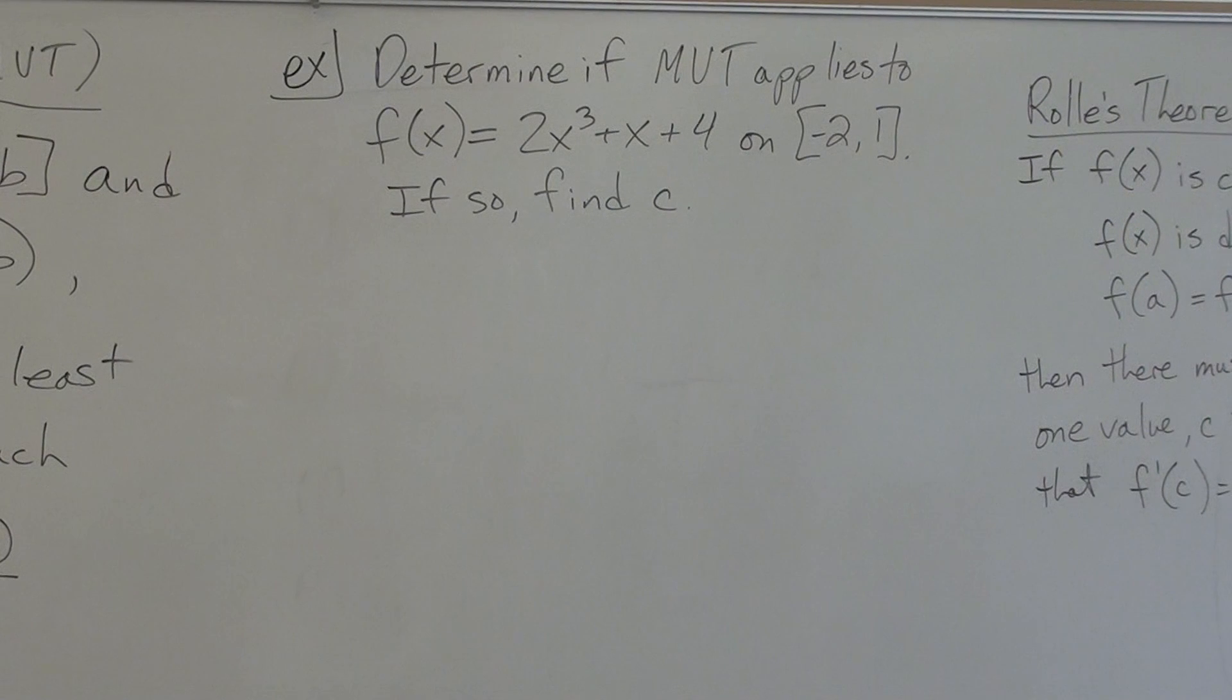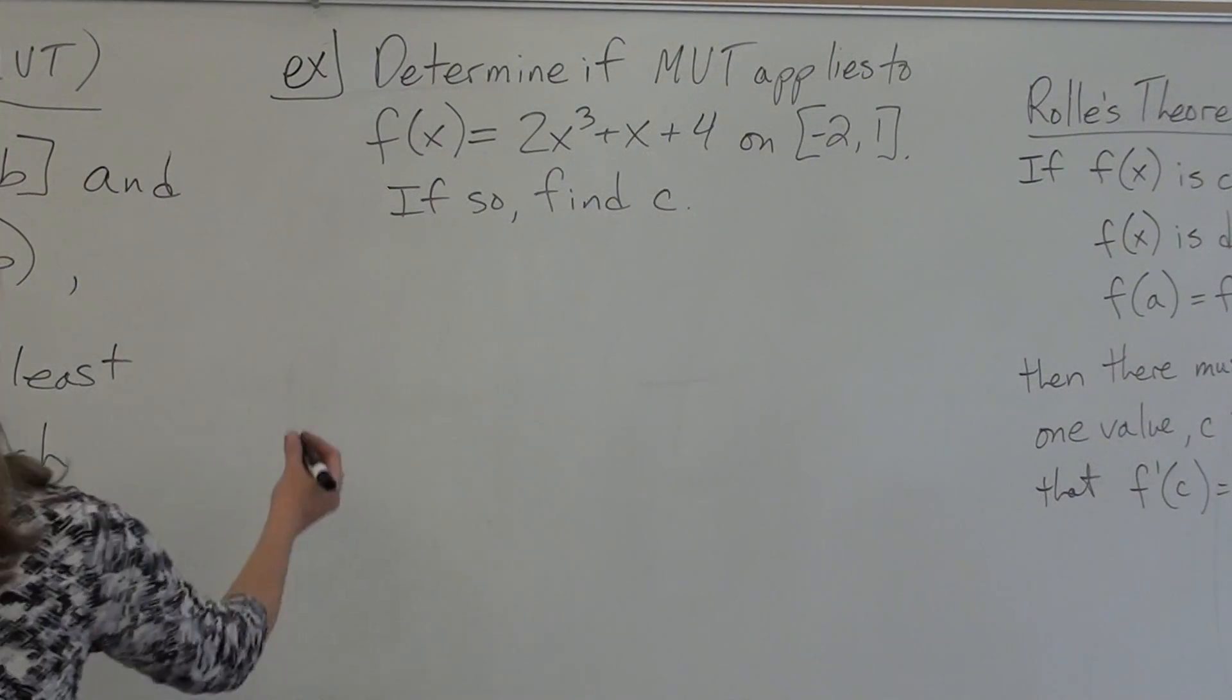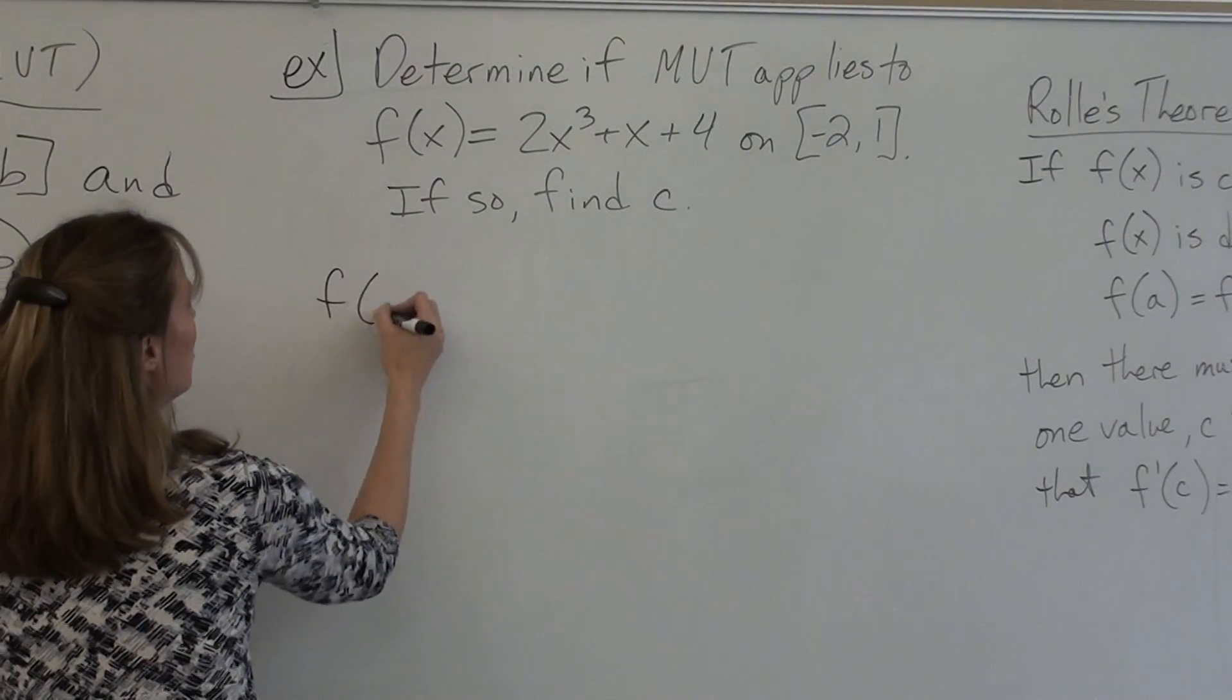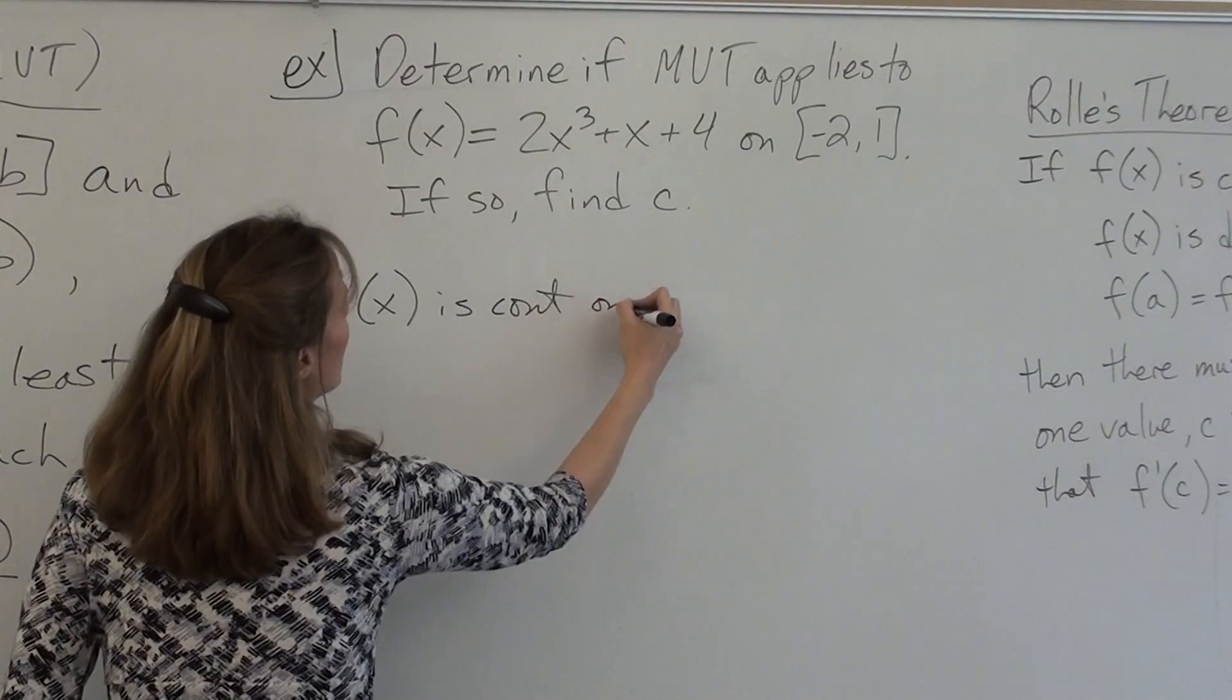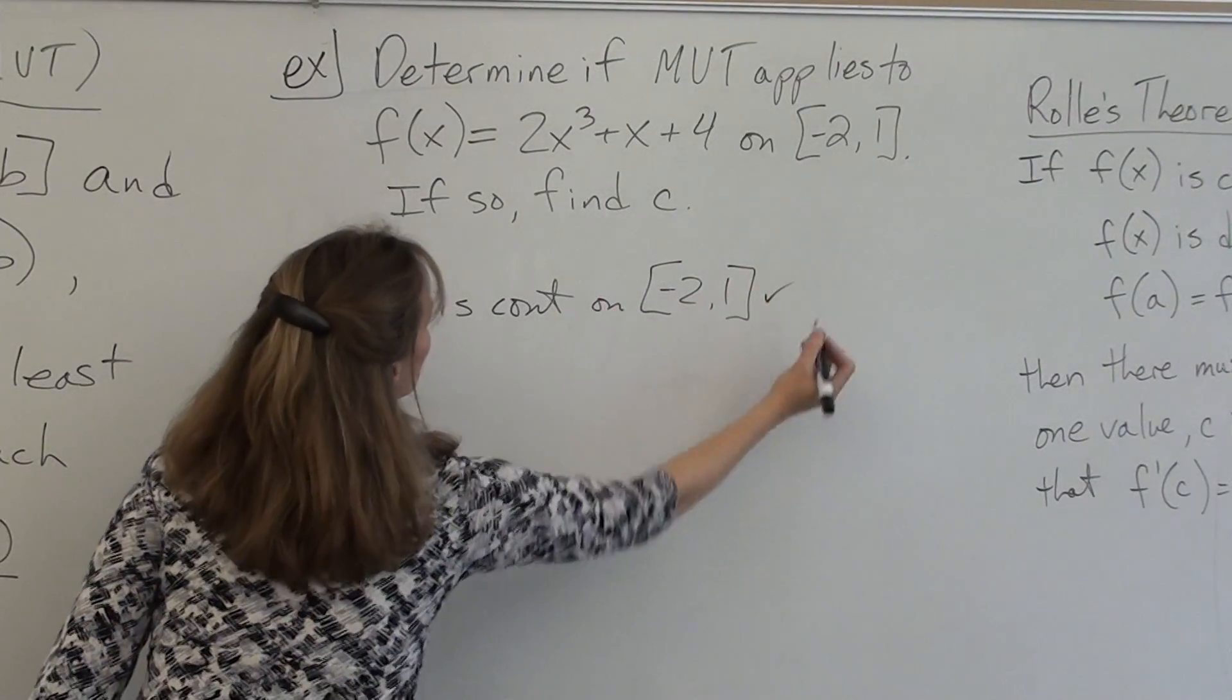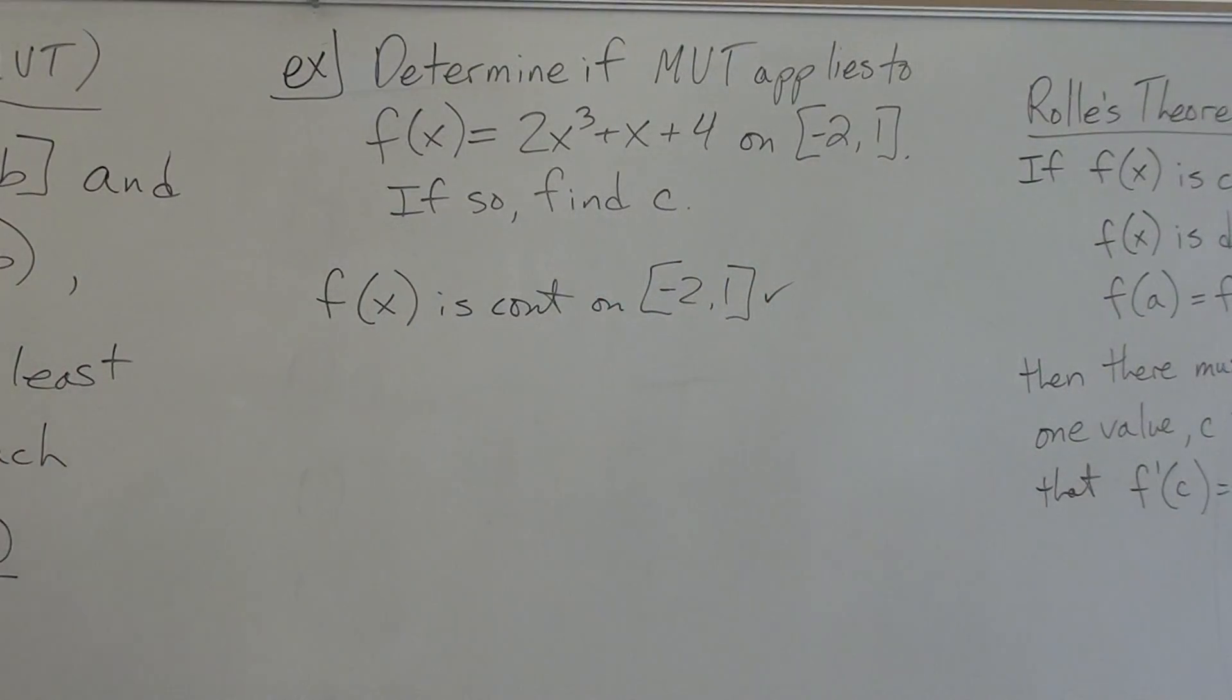What's the first step? Check if it's continuous. So there's no square roots. Is f(x) continuous? Yes. You have to write that you checked it. So the first thing you would be writing on your paper is f(x) is continuous on [-2,1]. Check. And you don't need to give an explanation. So it wouldn't be continuous if there was a vertical asymptote? If there was a vertical asymptote inside of that interval, yes, it would not be continuous.